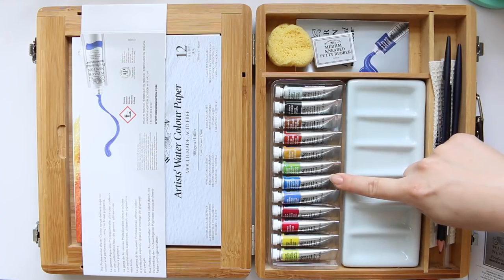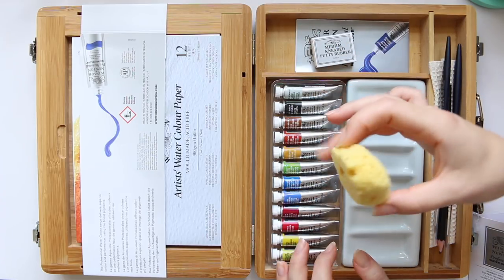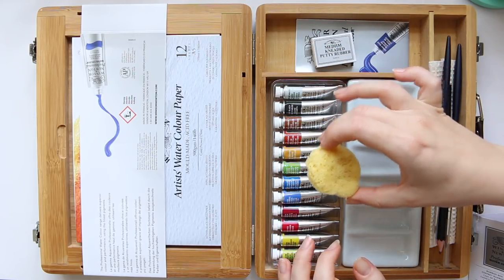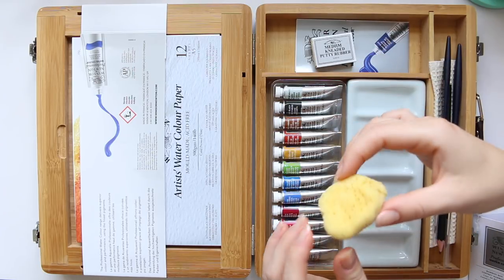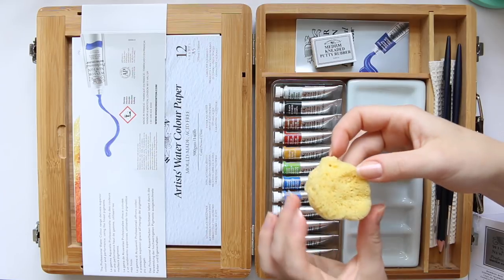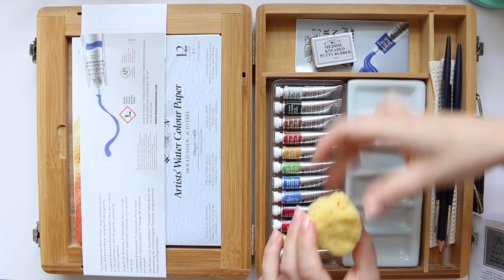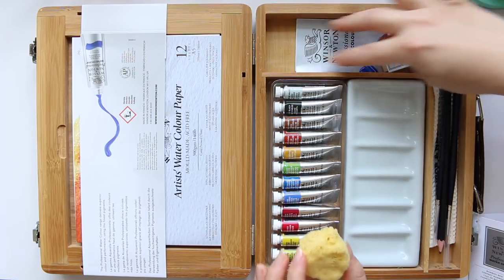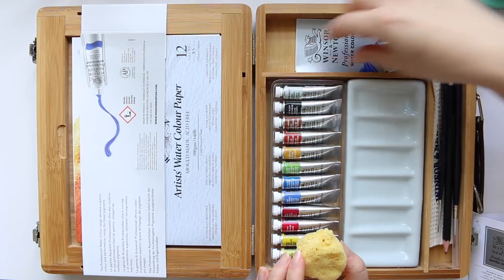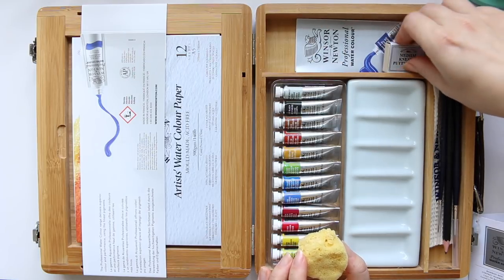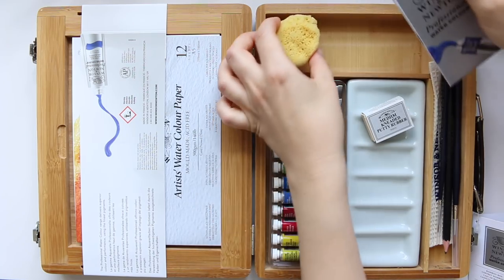Then you get this cute little sponge here which is great for texture and removing puddles and just, yeah, it's great. So this is a natural sponge as you can see, very handy to have. I like that these sections are done so nicely so you can have more brushes here, you can put other things that you need. So it's got enough space there for more items to keep.